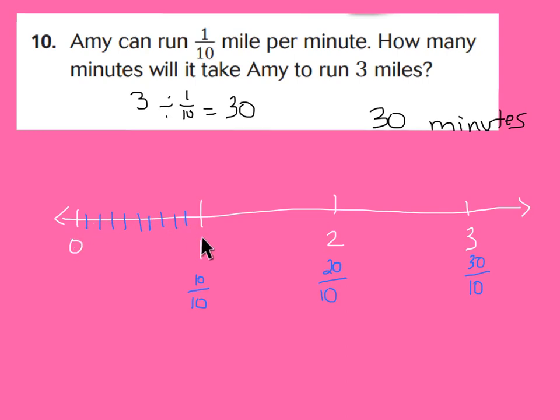Because 3 miles divided by 1/10 equals 30. We proved it right here. 10/10s, 20/10s, 30/10s. So we have 30 groups of 1/10. And our way to check it with multiplication would be 30 times 1/10. You're just working backwards here. 30 times 1/10 should equal 3 wholes. Let's check. 30 times 1, you multiply your numerator, would be 30 over 10. And we know 30 over 10 has a value of 3 wholes. So that's why we know we are correct when we say that it would take her 30 minutes.